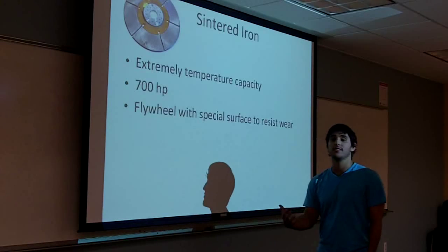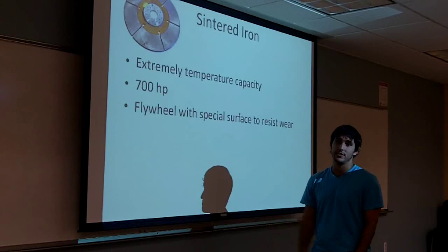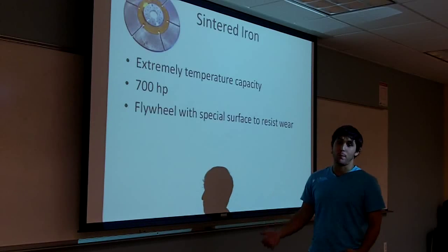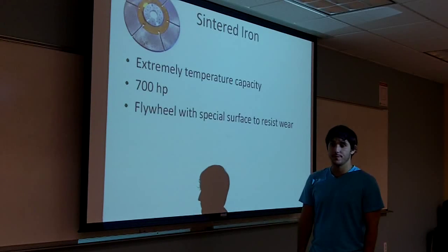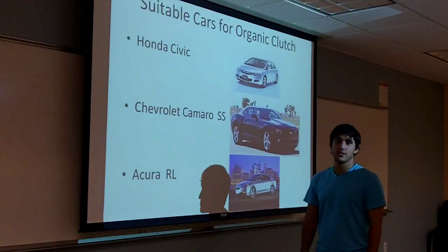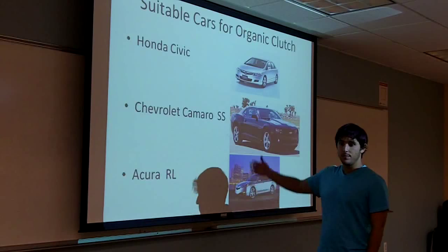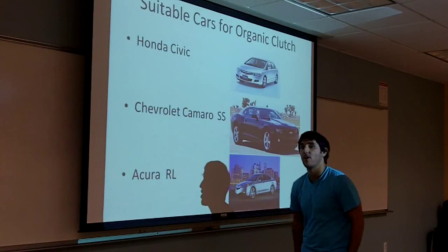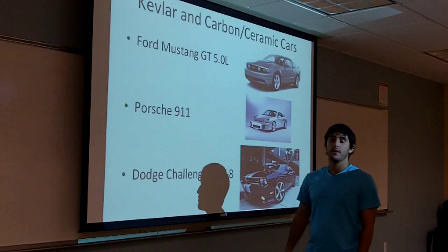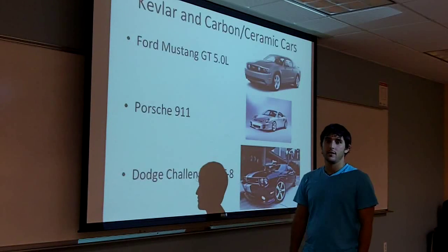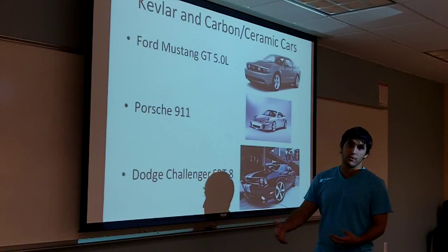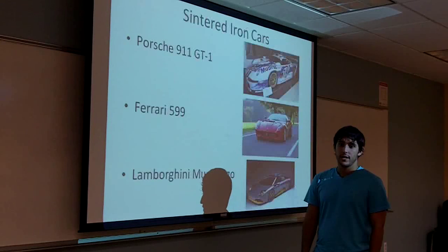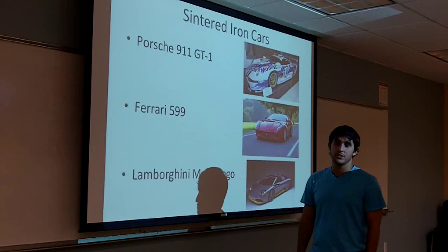Cinder iron can hold up to about 700 horsepower and has extreme temperature ranges. It is usually used for pulling tractors or drag racing. The problem with cinder iron is it kicks, which is not ideal for a regular car, but for drag racing you want that kick off the line. As examples: organic suits cars like the Honda Civic, Chevy Camaro, and Acura RL; Kevlar and carbon ceramic suit a Ford Mustang, Porsche, or Dodge Challenger; and cinder iron is for true race cars.